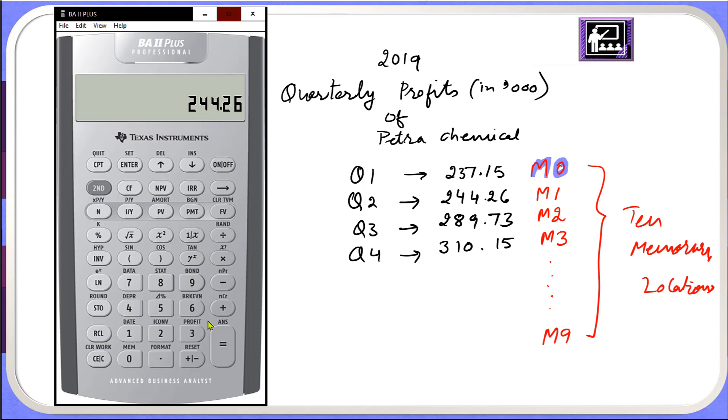Recall 2 plus, recall 3 and I press equal to. So this gives me total annual profits of petrochemical.